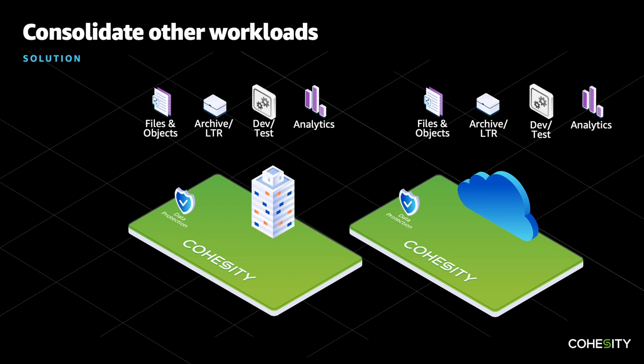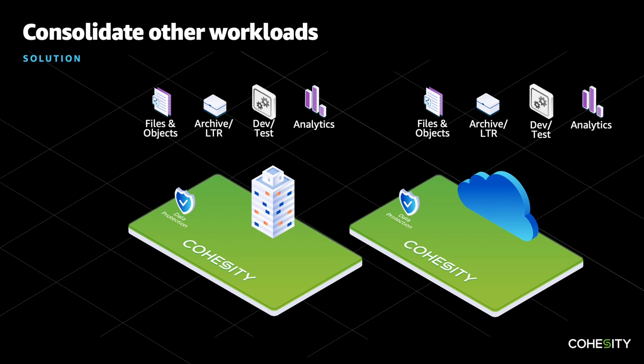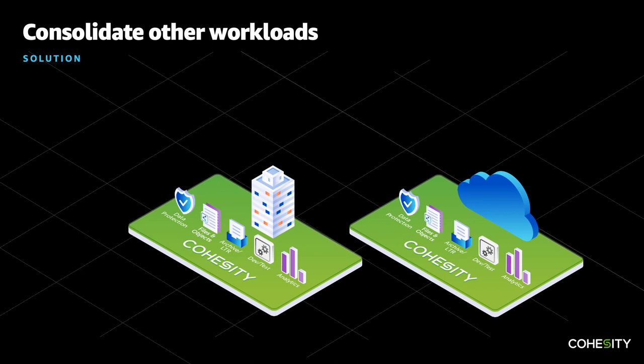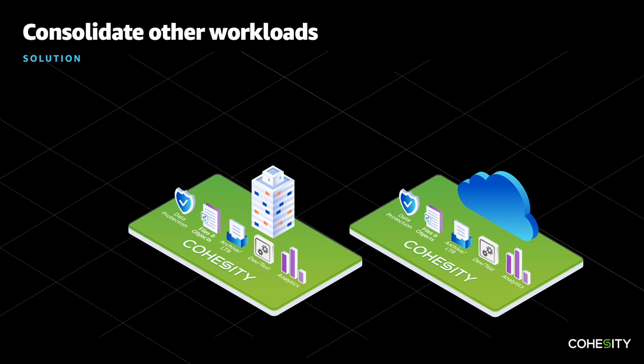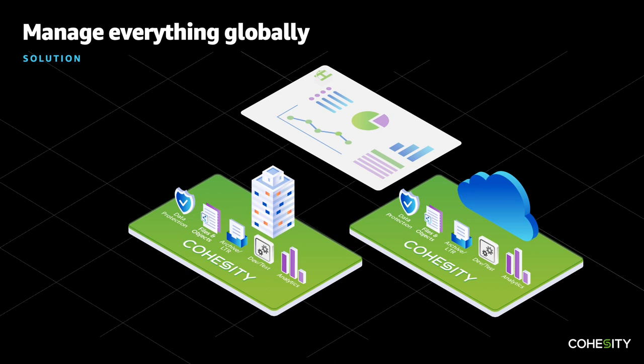Our customers have file and object needs, archival needs for long-term data retention, dev test needs, and analytics needs. All of those workloads today are being run in different silos from different vendors. So as next steps, one by one, we take them and consolidate them on the same Cohesity platform. Now we've tremendously simplified what our customers have on-premises on the left, as well as on the cloud on the right. But we don't want our customers managing multiple environments, so we put a level of manageability on top.